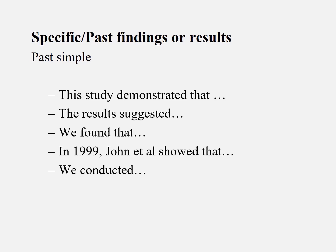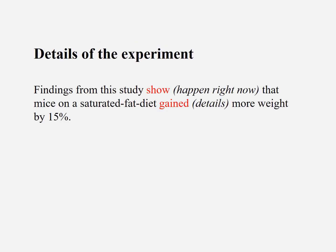For example, this is a complex sentence: 'we conducted...' — because it's very specific. For details of the experiment, if you write something very specific with details, you need to write in the past tense. You can have two parts: 'these findings from this study show' — 'show' happens right now, present tense, because this is not a specific result. But 'mice on a saturated diet gained more weight by 15%' — because it's a detailed specific finding, you use the past tense 'gained.'